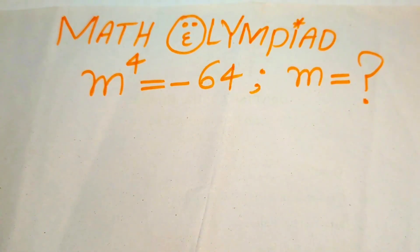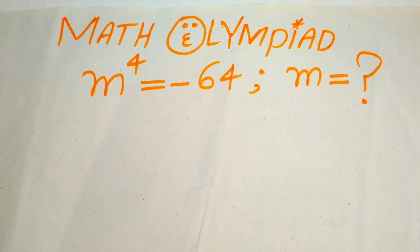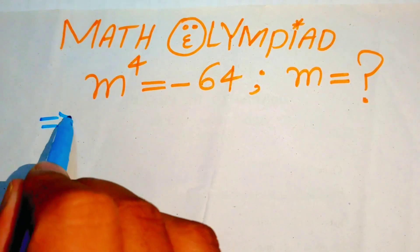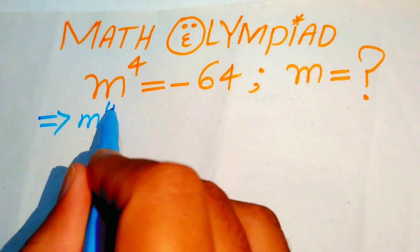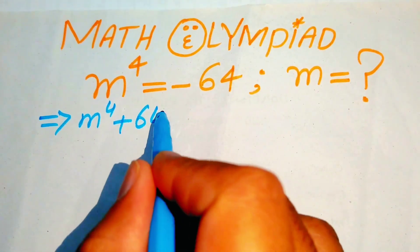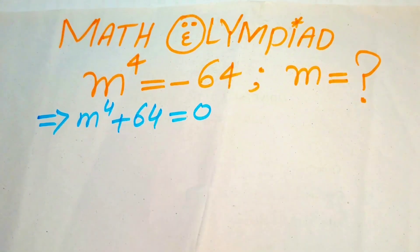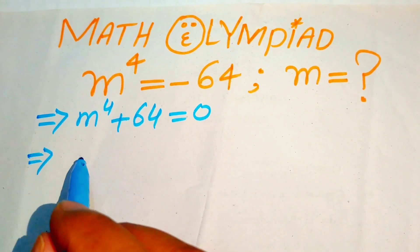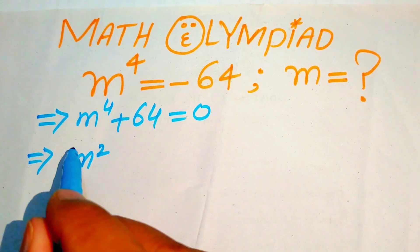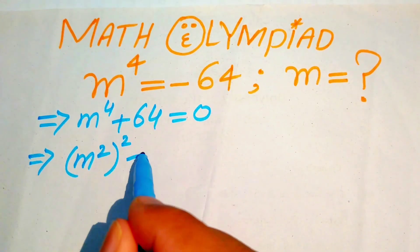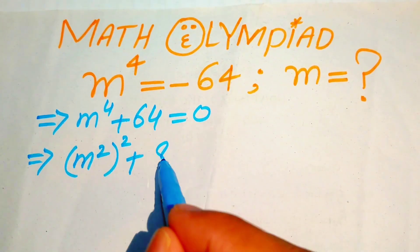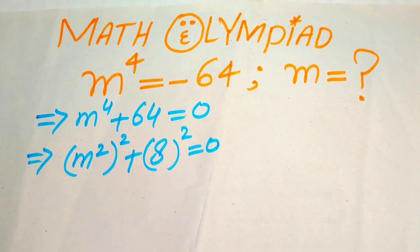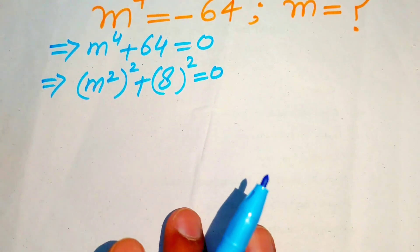The very first step is to move minus 64 to the left hand side, giving us m to the power of 4 plus 64 equals 0. We then rewrite this as m squared, whole squared, plus 8 squared equals 0.